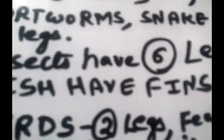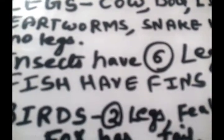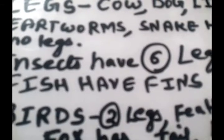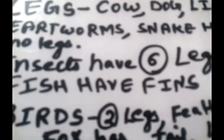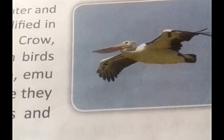Fish have fins which help them to swim in water. Fish do not have legs. Birds have two legs. Birds are the only animals that have wings and feathers on their body. Most animals have a tail. We can see pictures of birds, which have feathers and wings and can fly.